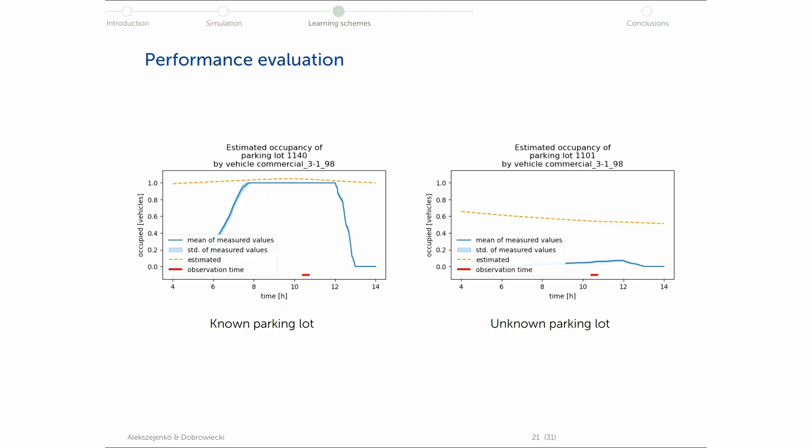And as you would believe, if this vehicle once moves in the network, it collects a very small amount of data from the whole network. And if it visits a parking lot, for example 1140, it has a fair approximation on the recording time, but it knows nothing about a parking lot which is not visited by this vehicle. So it's not a big surprise that this model does not really perform very well.